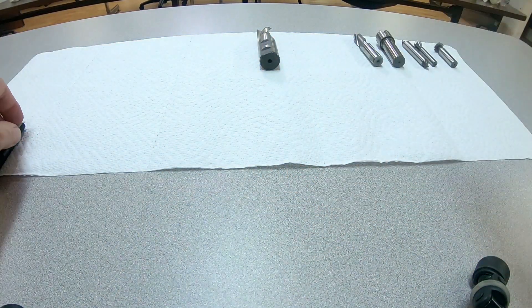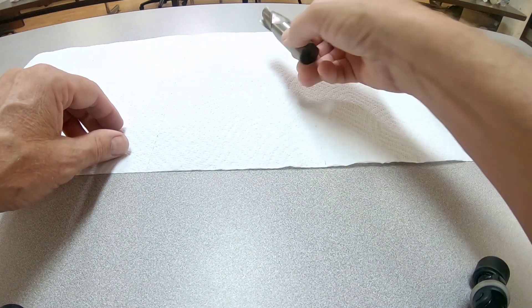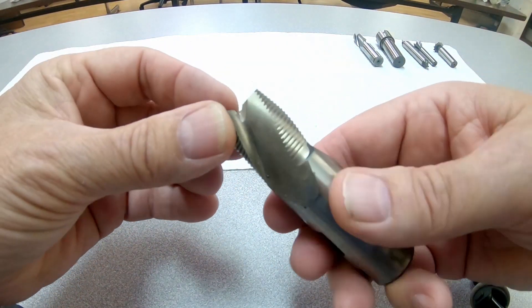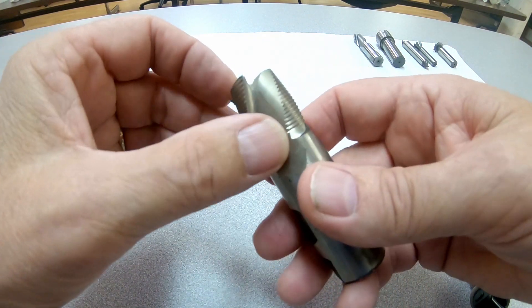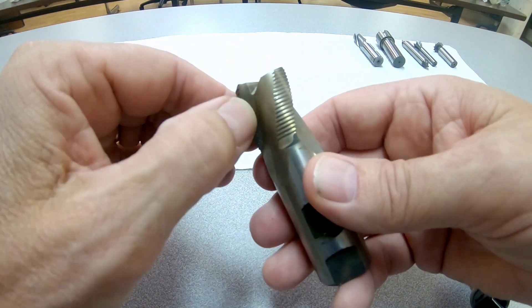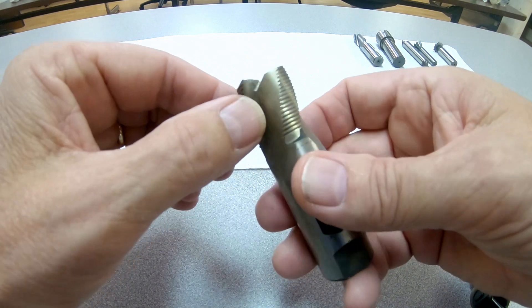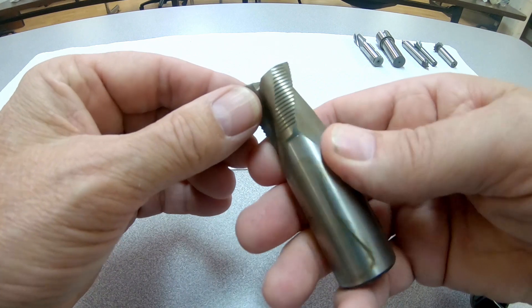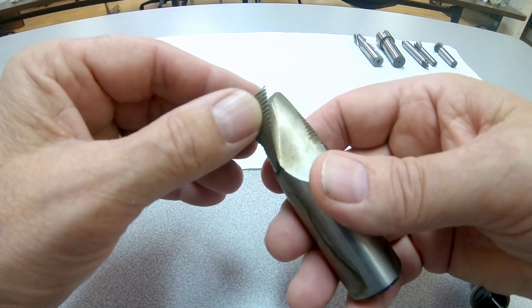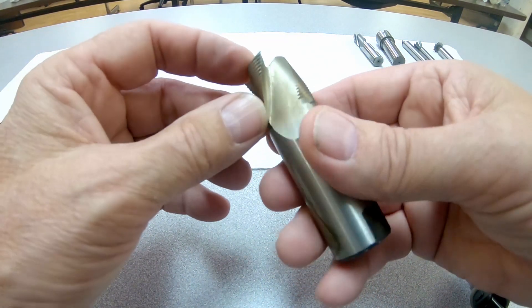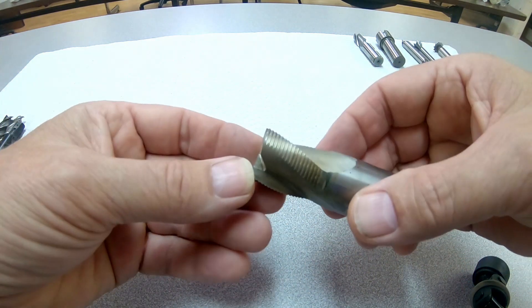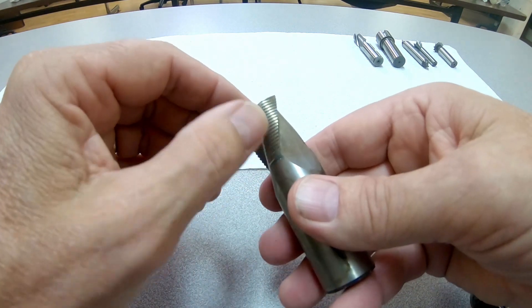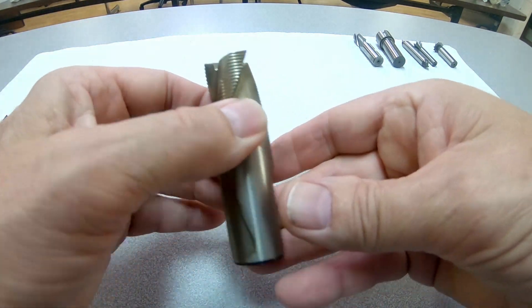Another type of end mill is a roughing end mill. Those are serrations around the side. This makes very tiny chips. These aren't, you wouldn't tend to use this on aluminum. It would still kind of clog up in aluminum. But on steel, this thing can really remove a lot of material. Now it leaves a rather rough surface. You'll have to come back with a normal end mill to clean it up. But that's a roughing end mill. And this one is rather fine. A lot of them have much coarser serrations than that.